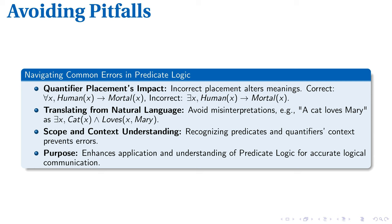Quantifier placement bears significant implications on the expressiveness of predicate logic. For example, the statement for all x, if x is a human then x is mortal conveys a universal truth about humans. While there exists an x such that if x is a human then x is mortal specifies the existence of at least one mortal human, altering the context drastically.